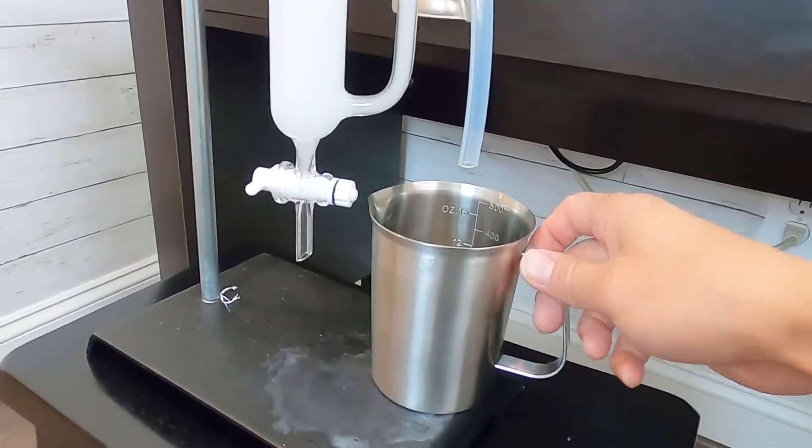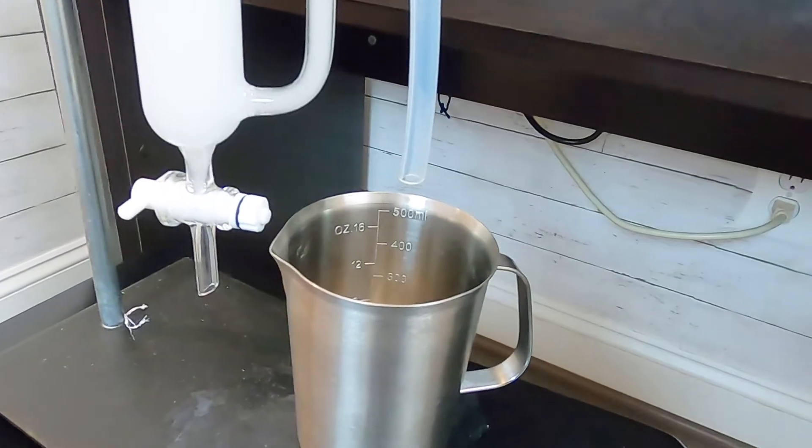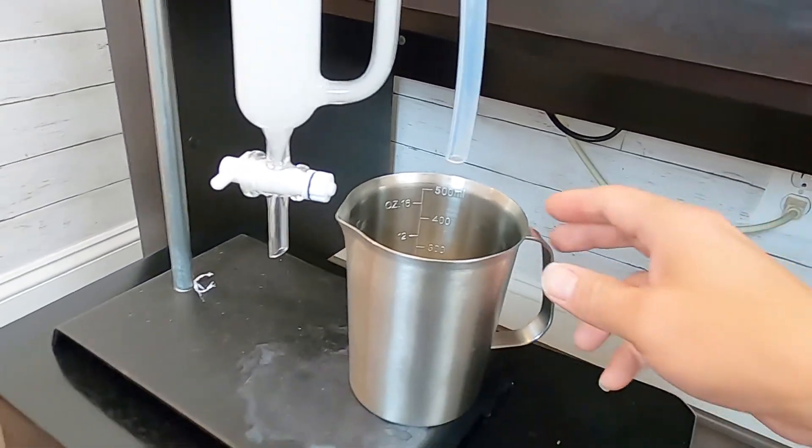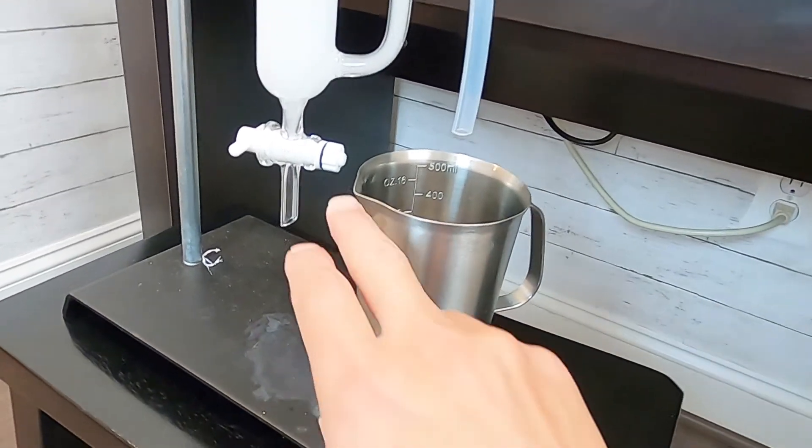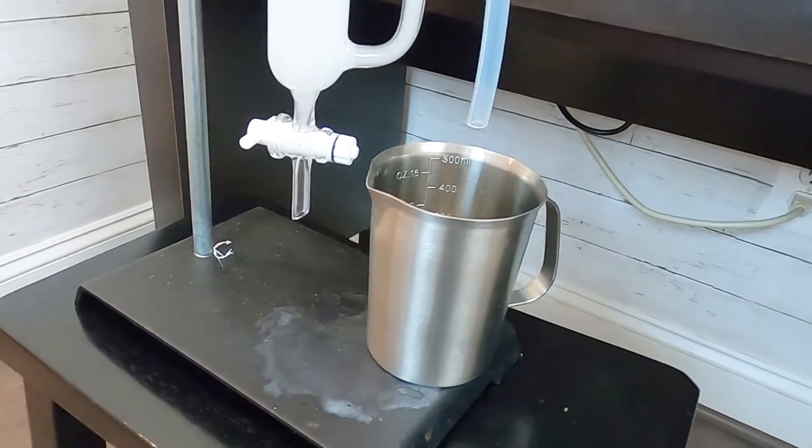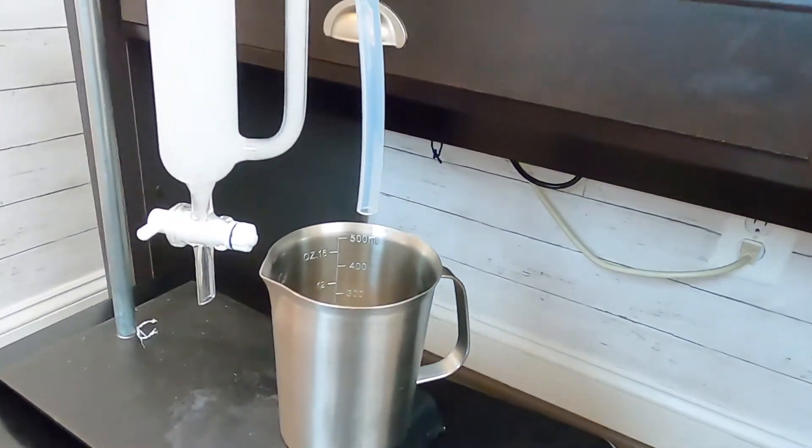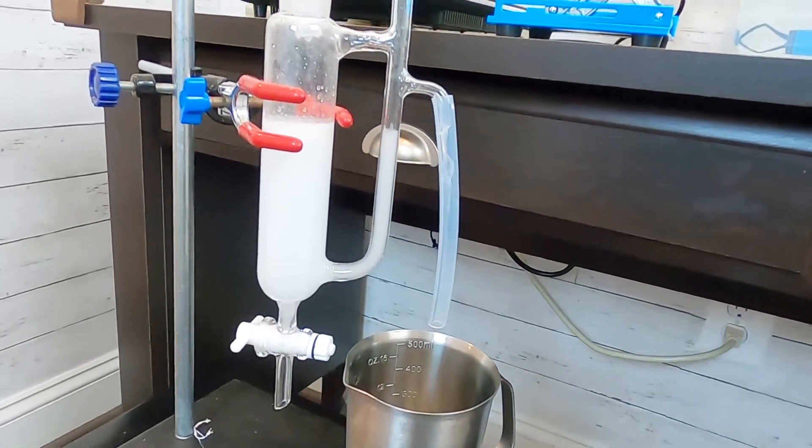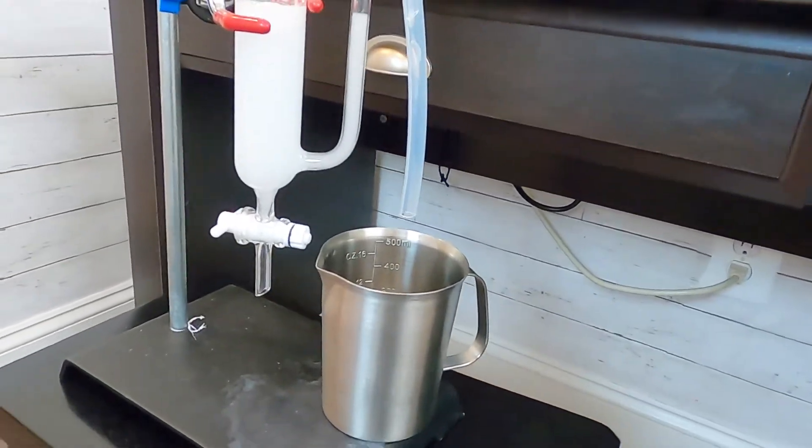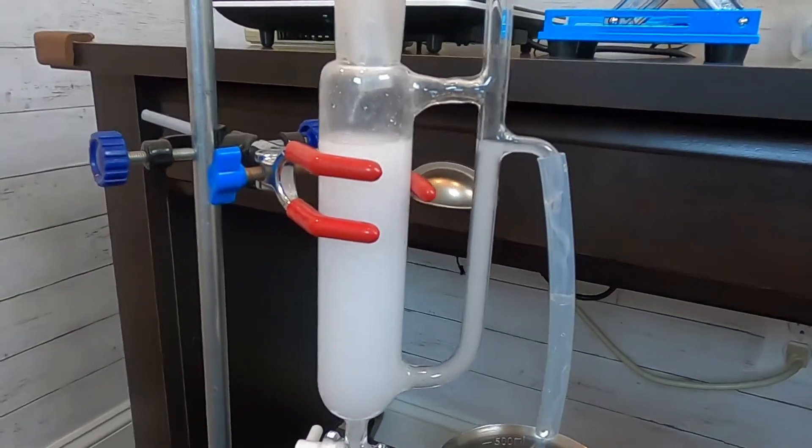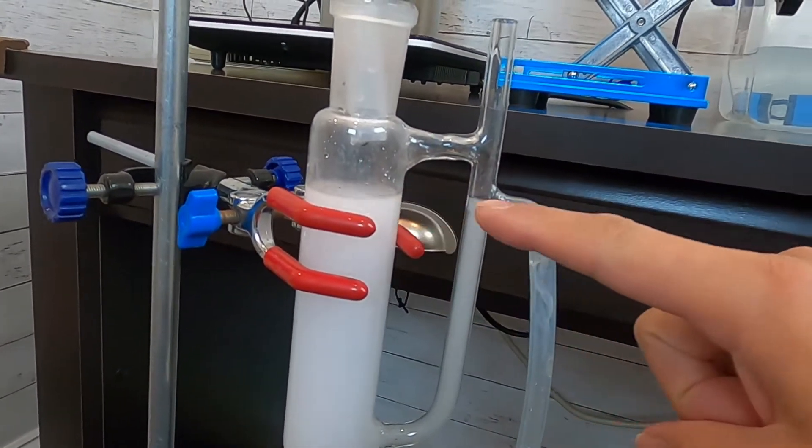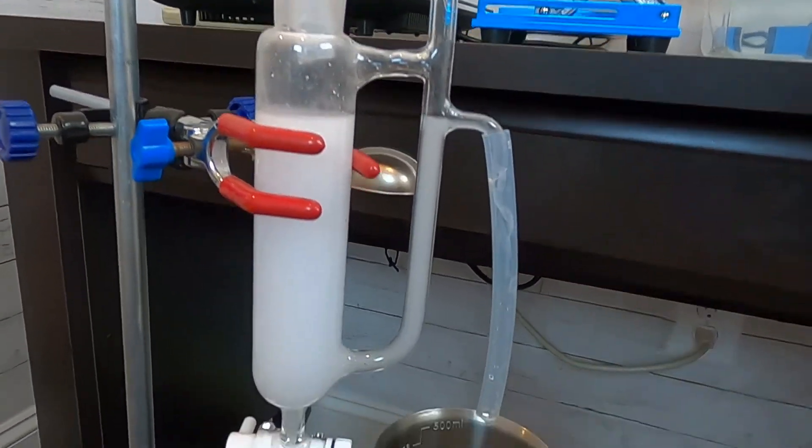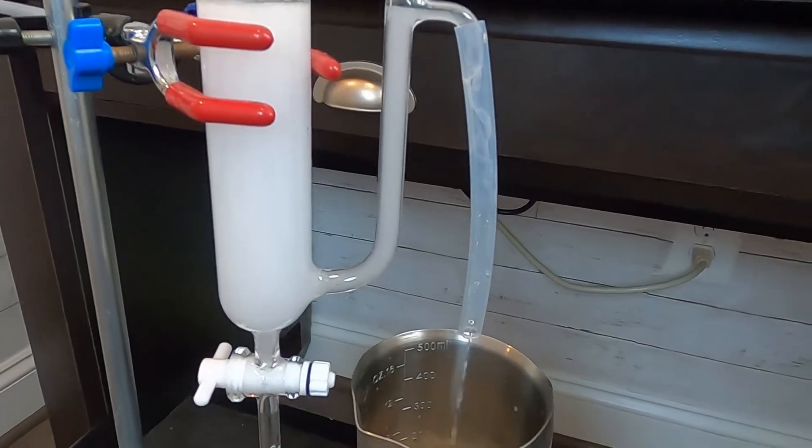And then the hydrosol will go through from the side tubing and go to the container. I'm going to collect them with this measuring cup and I love this because it has a little nose there, easy to transport and also good to measure. So now you can see once the water level go beyond here and the hydrosol is coming out.